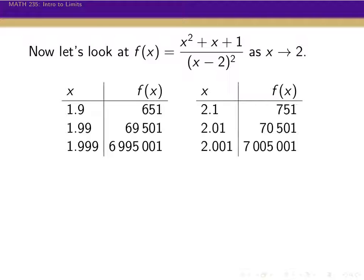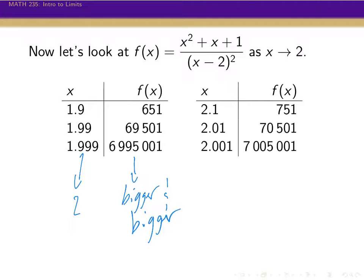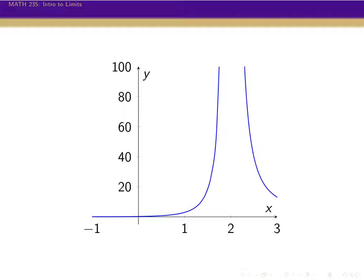In both cases here, as x is getting closer and closer to 2, these values are just getting bigger and bigger. The exact same thing is happening for values when x is a little bit bigger than 2. Here's a graph of this function. When we look at the graph, we can see the same thing — the y scale here is really big, the bottom is at 0 and the top's at 100. On both sides, as the x values get closer and closer to 2, the y values shoot up.